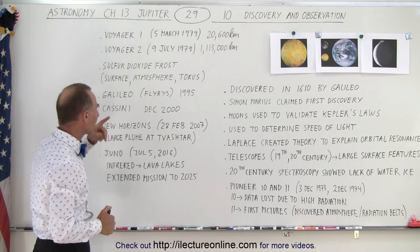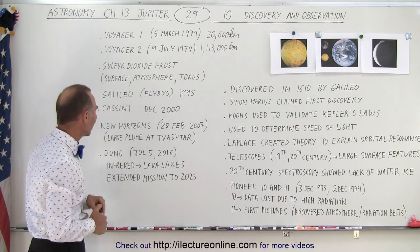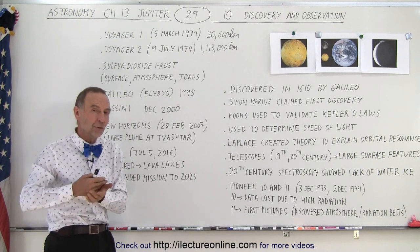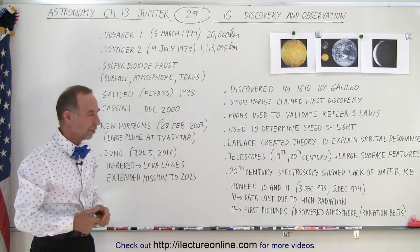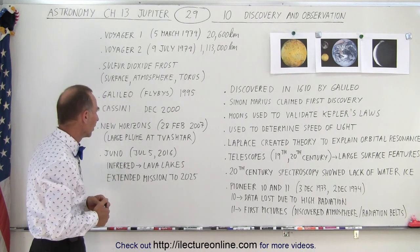Galileo, the spacecraft, had a flyby in 1995. And then Cassini, on its path to Saturn, also went by the planet in December 2000 and was able to take some pictures and some measurements.